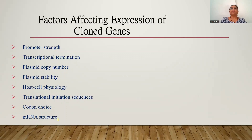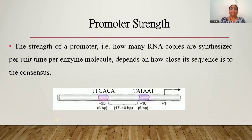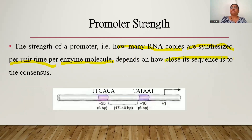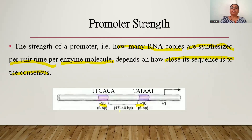Today's video is regarding promoter strength. What do we mean by promoter strength? The strength of a promoter — that is, how many RNA copies are synthesized per unit time per enzyme molecule — depends on how close its sequence is to the consensus. The promoter structure consists of the minus 10 region and the minus 35 region, and the minus 10 and minus 35 regions are separated by 17 to 19 base pairs.